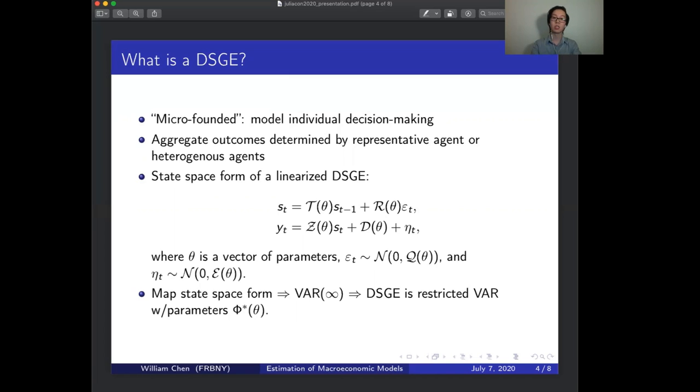Typically, we linearize DSGEs to obtain a linear state-space representation. The underlying states will follow a linear transition equation subject to shocks epsilon t, all of which depend on theta, which are the parameters of the DSGE. The measurement equation then maps these states to observable time series like GDP, and this mapping may also depend on the DSGE's parameters.